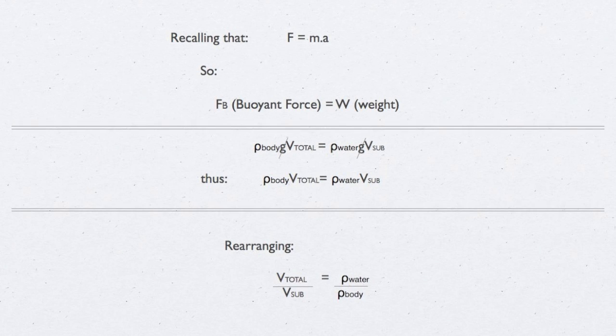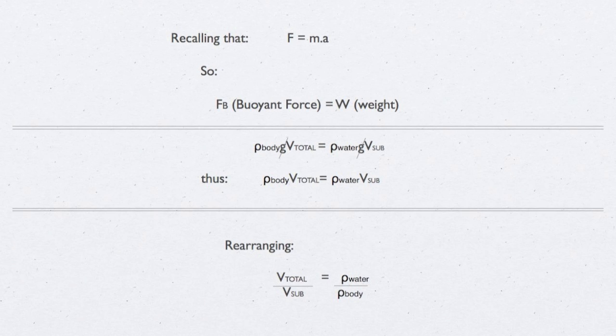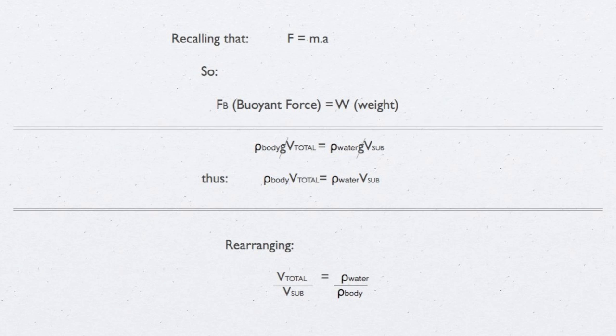The buoyant force equals the weight of the volume of the water displaced by the iceberg, which is the density of the water times the volume of the water displaced, V sub, times the acceleration due to gravity, g.